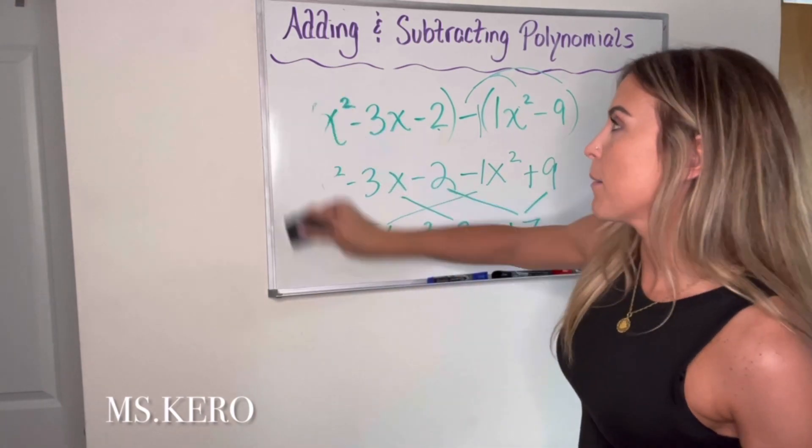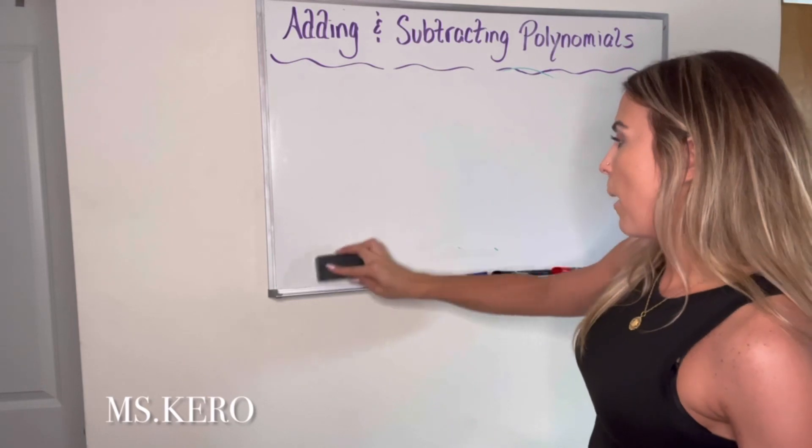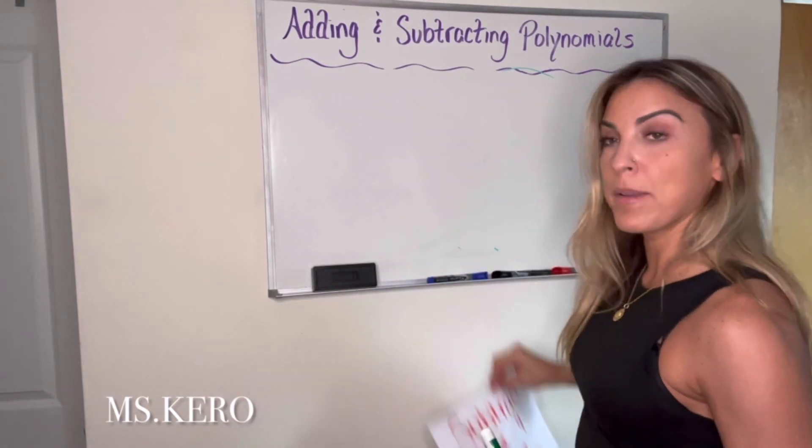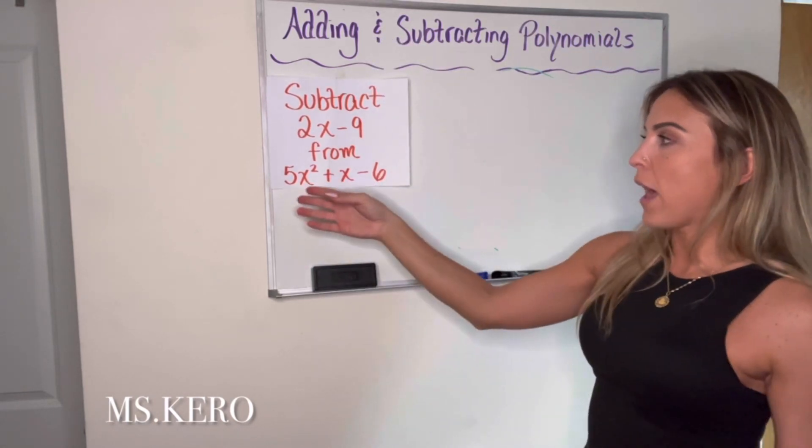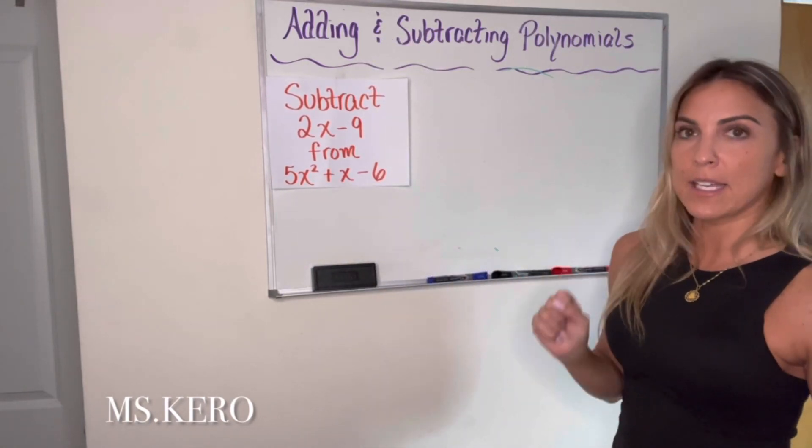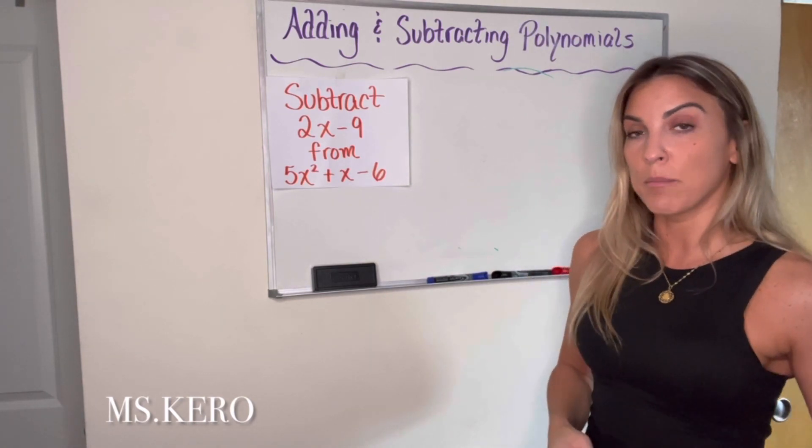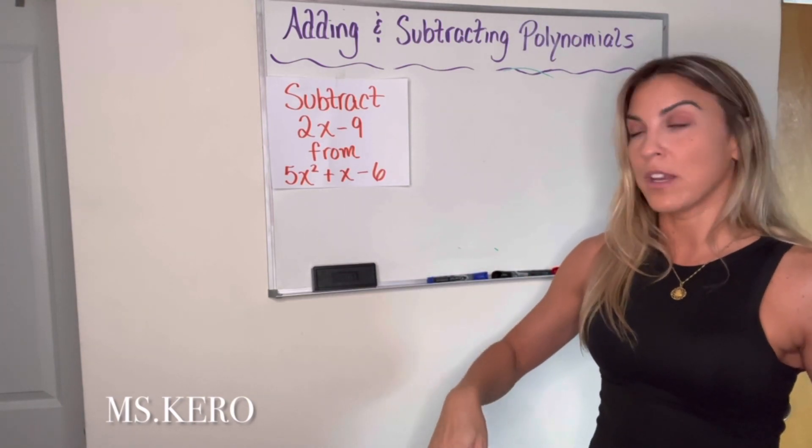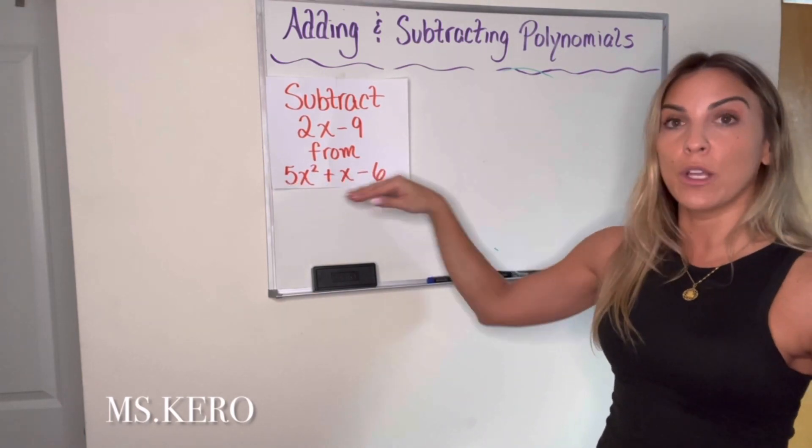One last example I want to do is show you what this looks like when it's written in words. Because there's a very common mistake that happens sometimes when we see a problem like this. So if you're asked to subtract 2x minus 9 from 5x squared plus x minus 6, order is very important. So when you are subtracting something from an expression, that expression needs to come first, right? This is what I'm subtracting from.